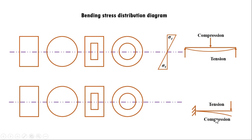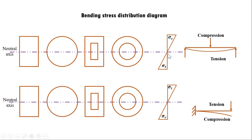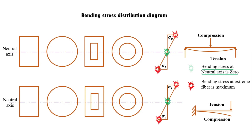For a cantilever beam with a point load at the free end, the upper part is in tension and the lower part is in compression — opposite to the simply supported case. Key points to remember: bending stress at the neutral axis is always zero, and bending stress at the extreme fiber is always maximum.